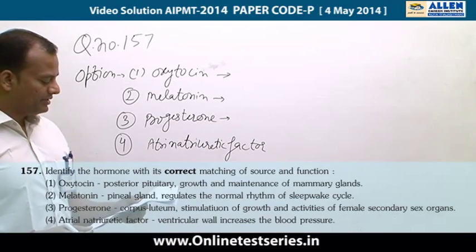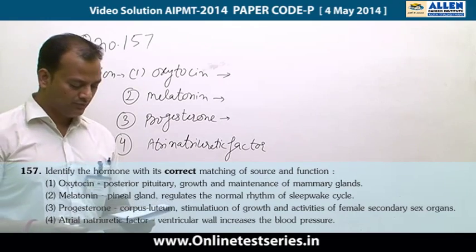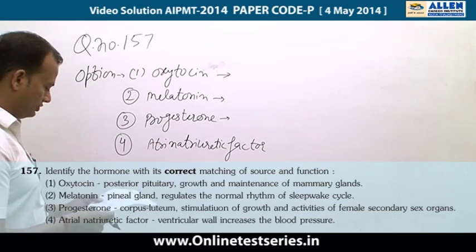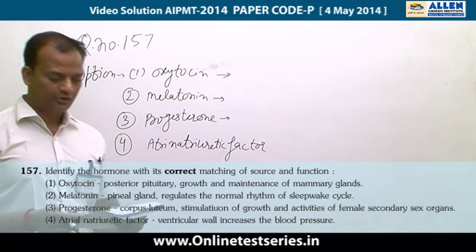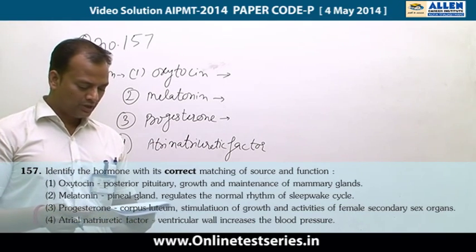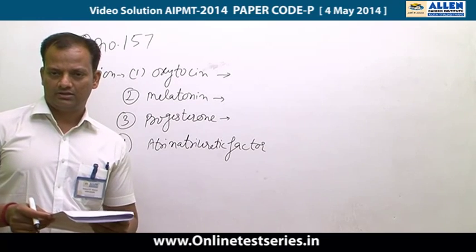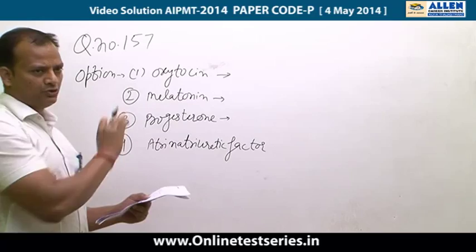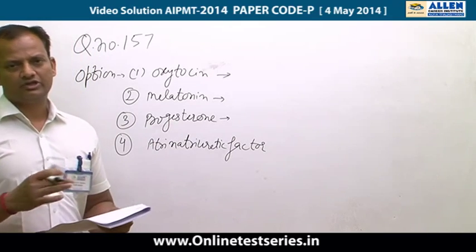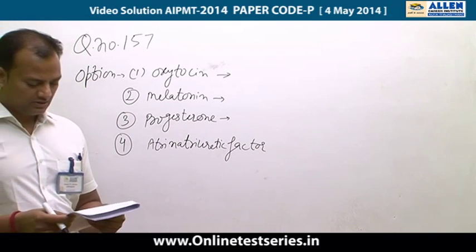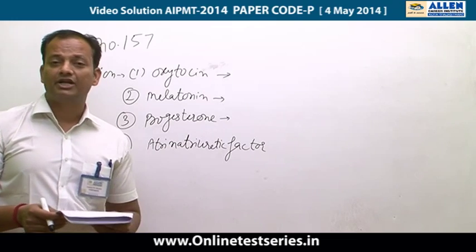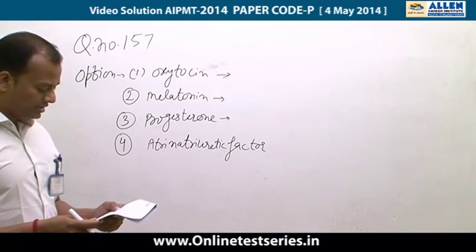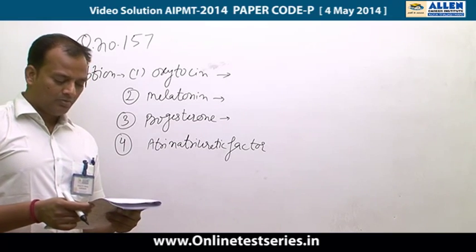Question number 157: Identify the hormones with the correct matching of source and function. First option — oxytocin released by posterior pituitary for growth and maintenance of mammary glands. But oxytocin is actually related to the milk ejection reflex, not the growth and maintenance of mammary glands, so this option is incorrect.